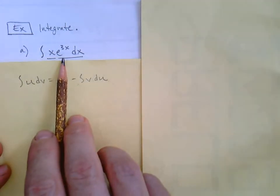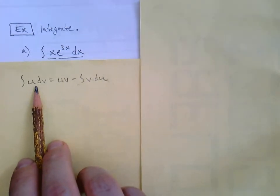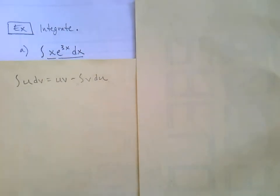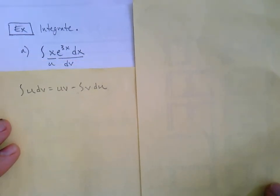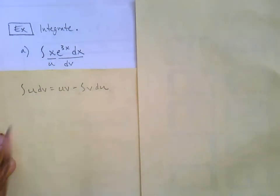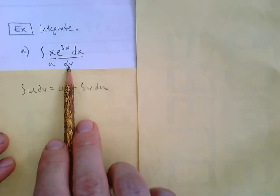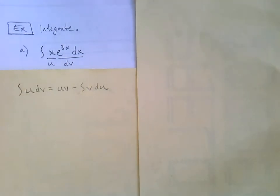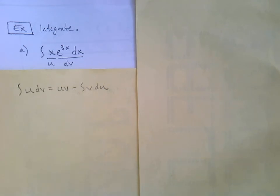Let's start with part a: integrate x·e^(3x) dx. Think of that as the left side of the formula — u times dv. We're going to say u = x and dv = e^(3x) dx. Part of the challenge of integration by parts is knowing how to make that identification, and we'll even try it a different way to see why it doesn't work.